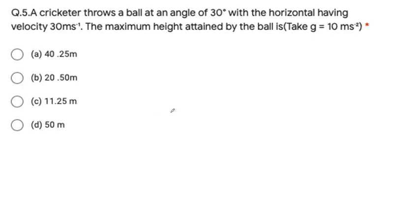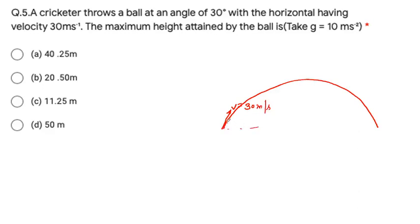Using the resultant force formula, theta is 90 degrees. Cos of 90 degrees is equal to zero, so the formula becomes F = √(A² + B²) because the third term goes to zero. So the resultant force is √(A² + B²). The correct option is option C.